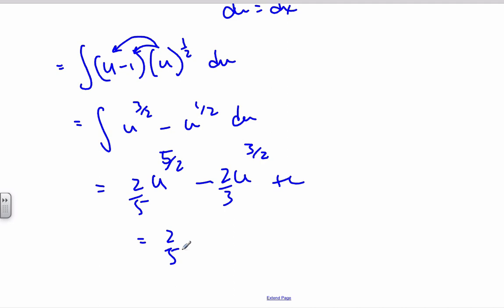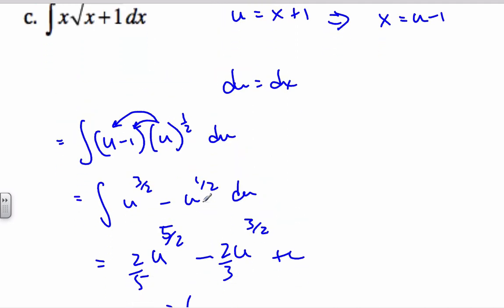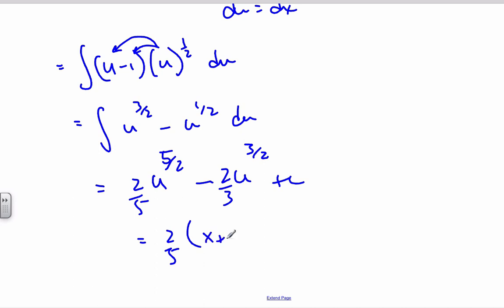And then I have two-fifths. U, I know, was, from the top, X plus 1, X plus 1 to the five-halves minus two-thirds, X plus 1 to the three-halves plus C.